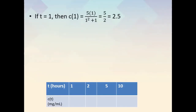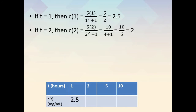If t is equal to 1, then c of 1 is equal to 5 times 1 over 1 squared plus 1, which is equal to 5 over 2, which is equal to 2.5. If t is equal to 2, then c of 2 is equal to 5 times 2 over 2 squared plus 1, which is equal to 10 over 5, which is equal to 2 milligrams per milliliter.